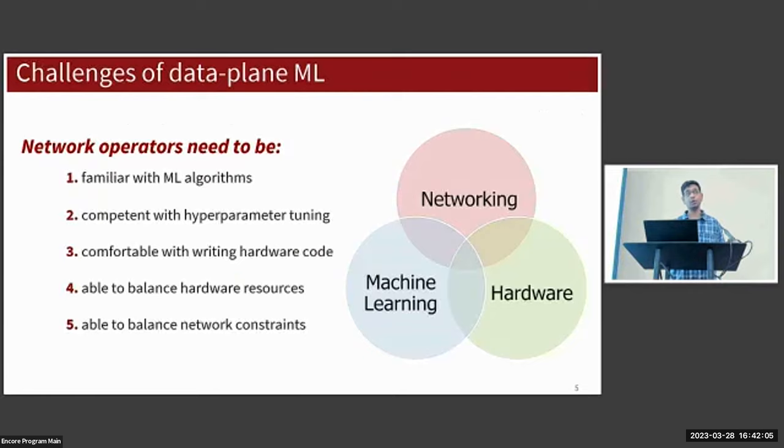It turns out that developing these data plane ML models actually requires quite a bit of expertise in diverse areas with little overlap - that could be networking, machine learning, and hardware. Network operators need to be familiar with ML algorithms and hyperparameter tuning, they need to be comfortable writing hardware code, and they need to be able to balance both hardware resources and network constraints.